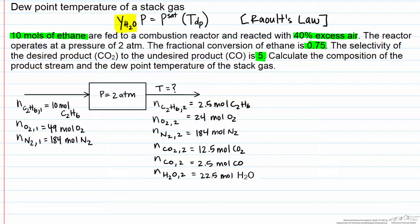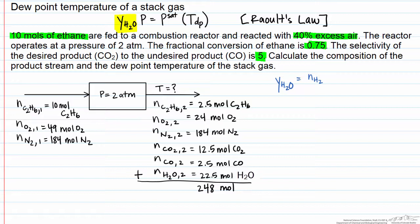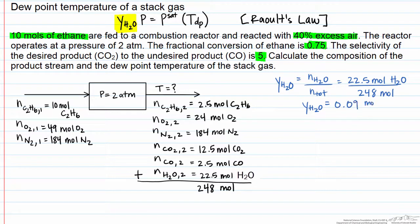Since nitrogen is not a reactive species, the number of moles of N2 out equals the number of moles that came in, which is 184 moles. Since we are looking for the mole fraction of water, we need to find the total moles by adding up all the products in our stack gas. When we add this all up, we get a total of 248 moles. Note the large difference we would have gotten if we hadn't included nitrogen. The mole fraction of water, Y_H2O, equals 22.5 divided by 248, which gives 0.09.